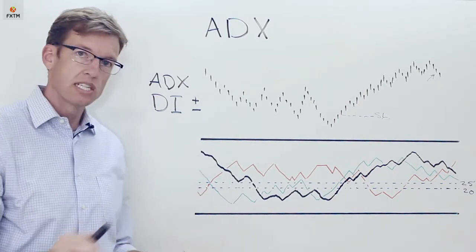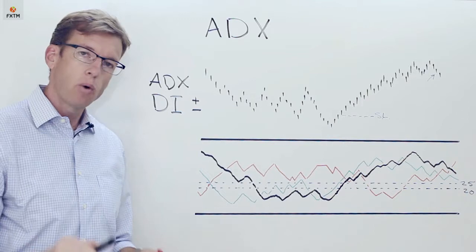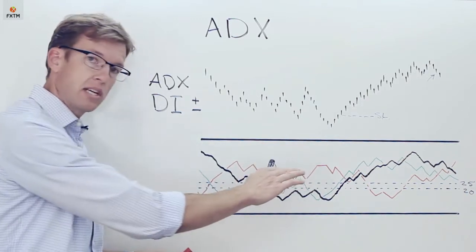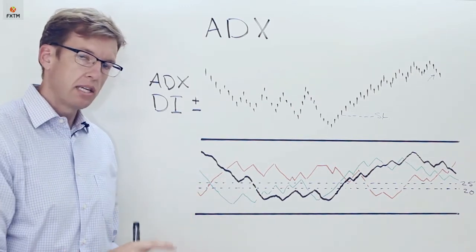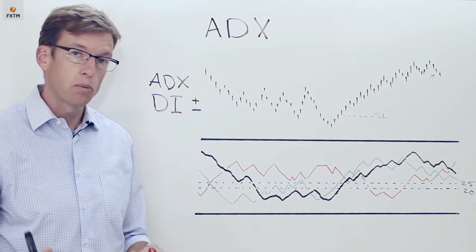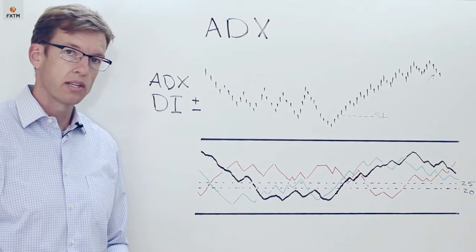So it's indicating a strong trend. And what we're looking for is just the opposite of what we discussed here, which is a period when the red or negative directional indicator crosses above the green or positive directional indicator triggering that position.